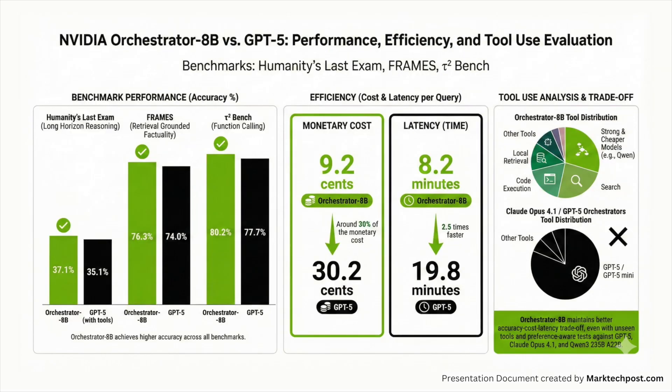The NVIDIA research team evaluates Orchestrator 8B on three benchmarks: Humanity's Last Exam, Frames, and Tau-Squared Bench, which test long-horizon reasoning, retrieval-grounded factuality, and function calling. Orchestrator 8B achieves 37.1% on Humanity's Last Exam versus 35.1% for GPT-5 with Tools, 76.3% on Frames versus 74.0%, and 80.2% on Tau-Squared Bench versus 77.7%.